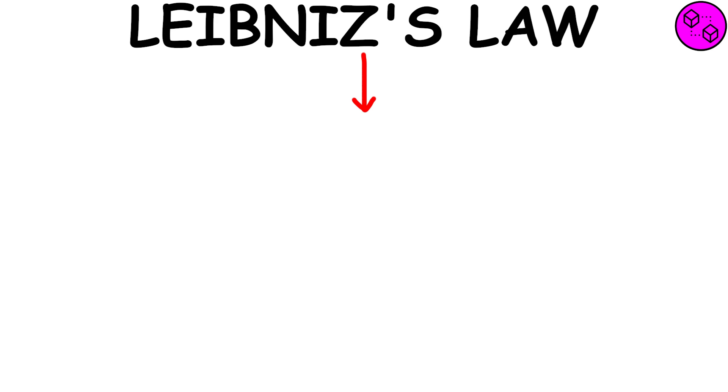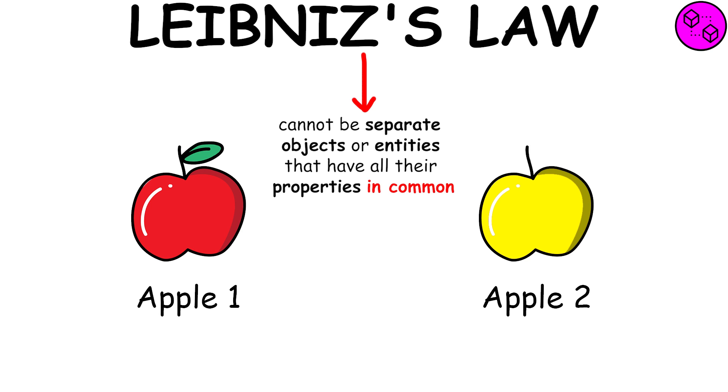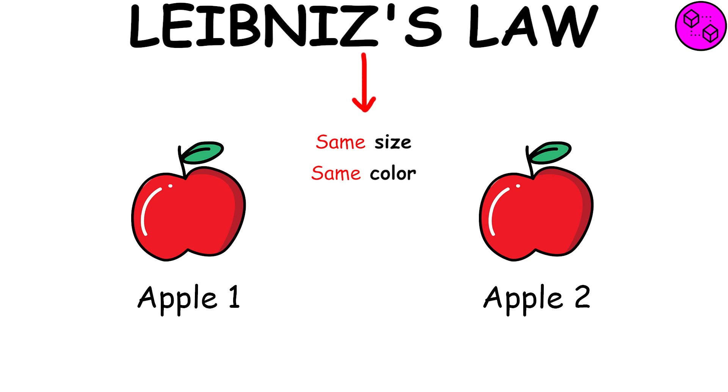Leibniz's Law states that there cannot be separate objects or entities that have all their properties in common. If two objects share all the same characteristics and properties, then they are the same thing.